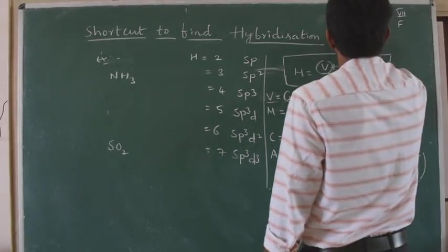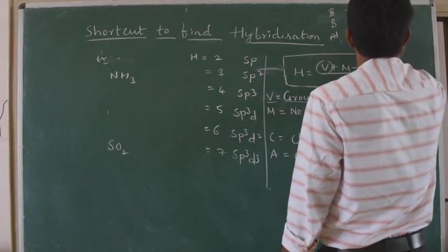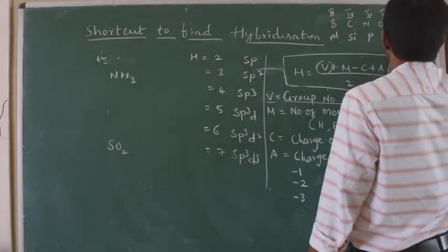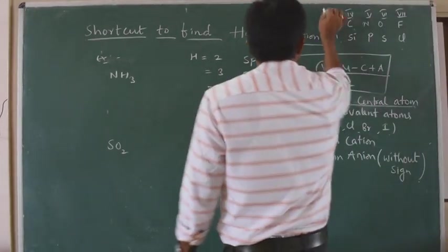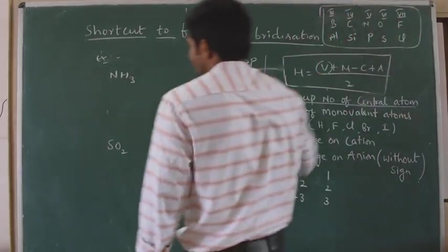Boron and Aluminium (group 3), Carbon and Silicon (group 4), Nitrogen and Phosphorus (group 5), Oxygen and Sulfur (group 6), Chlorine and Bromine (group 7). If you remember these group numbers, we can find out the hybridization.